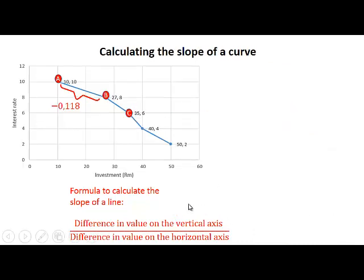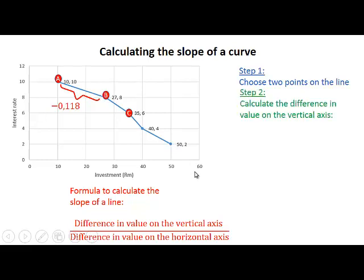We're going to calculate the slope of the curve between points B and point C. To calculate the difference in value on the vertical axis, we take the value at point C — the interest rate, which is 6 — minus the value at point B, which was 8. From point B to point C, the interest rate decreased by 2, so it's minus 2.